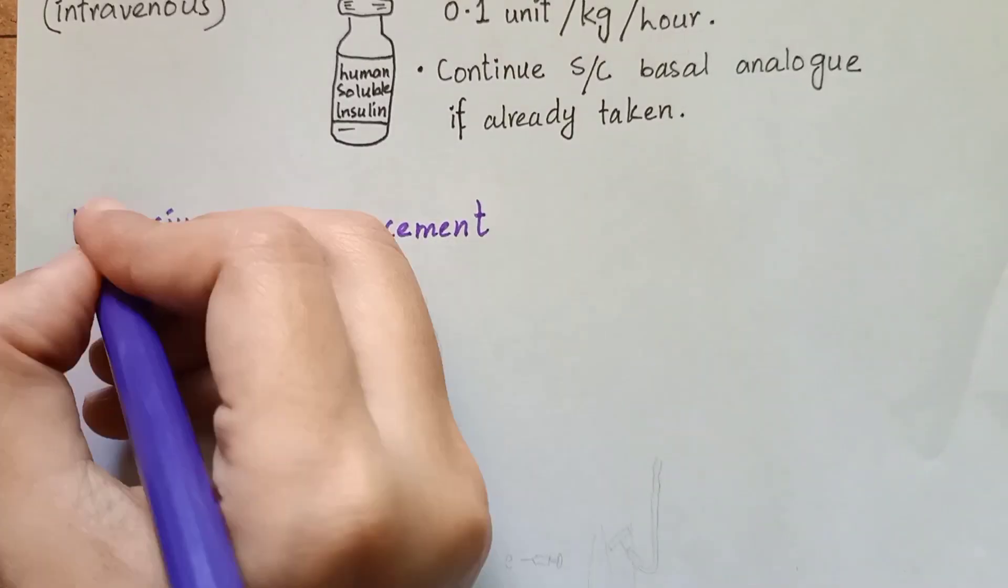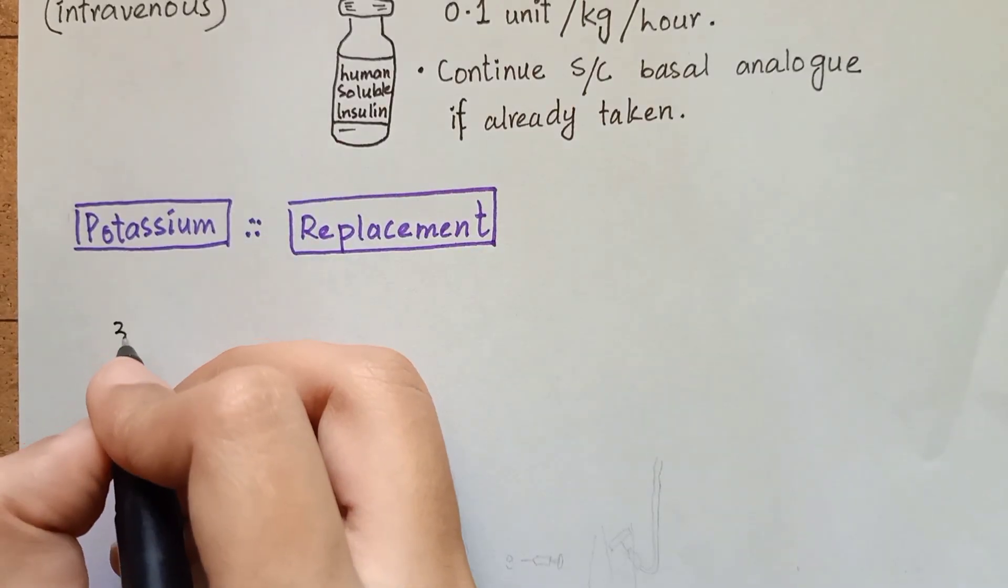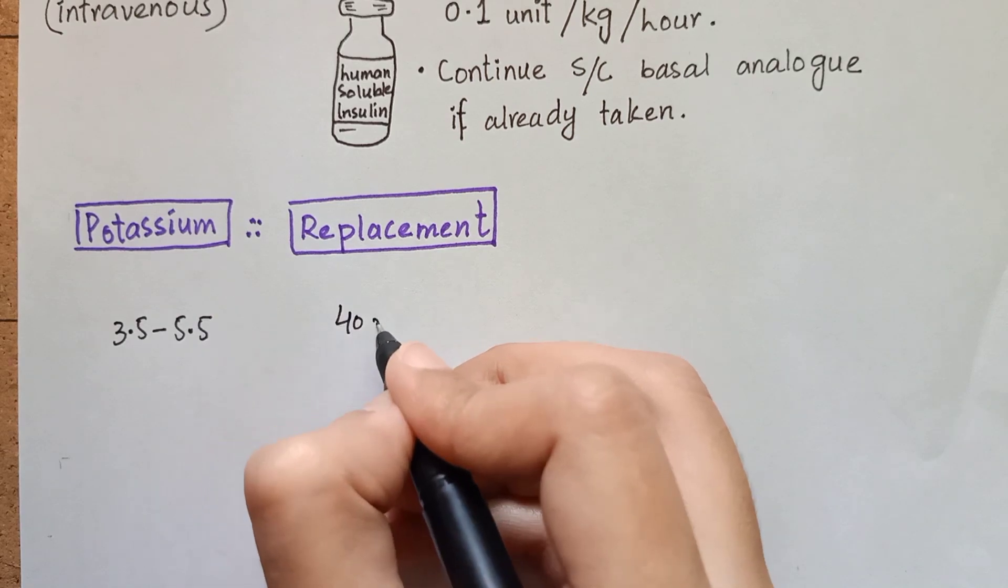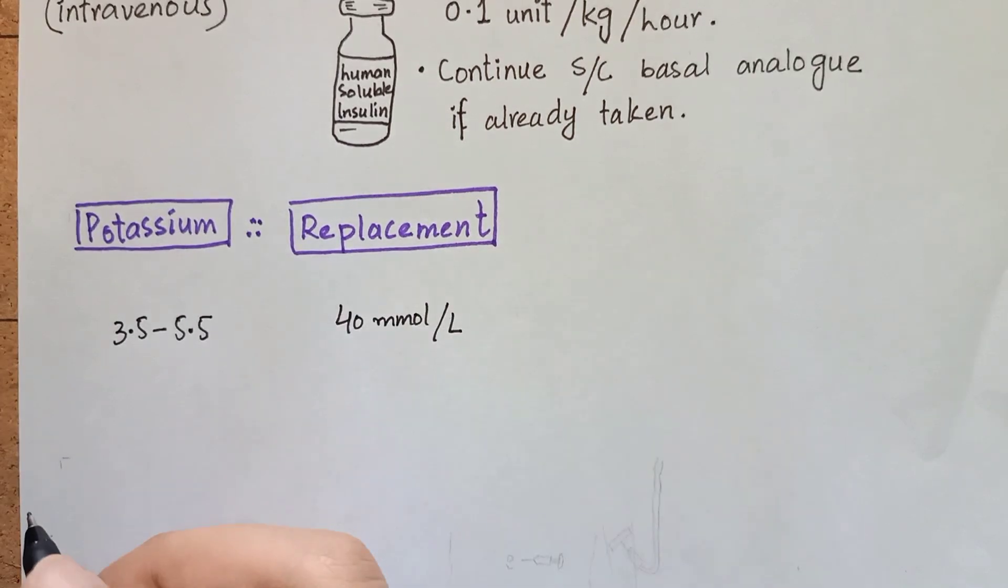If potassium level is in the range of 3.5 to 5.5 you will add 40 millimole of potassium chloride in 1 liter of normal saline intravenously.